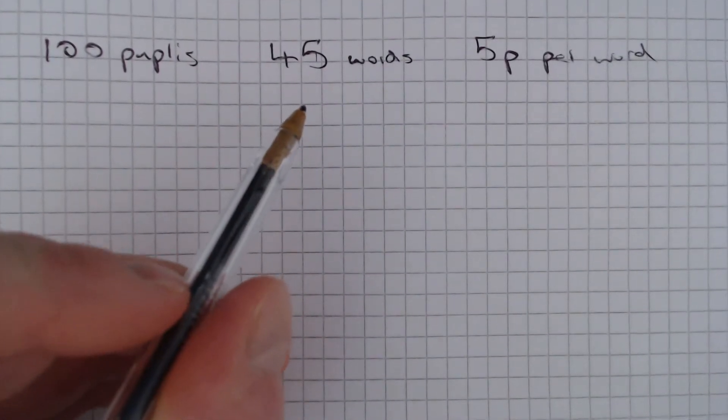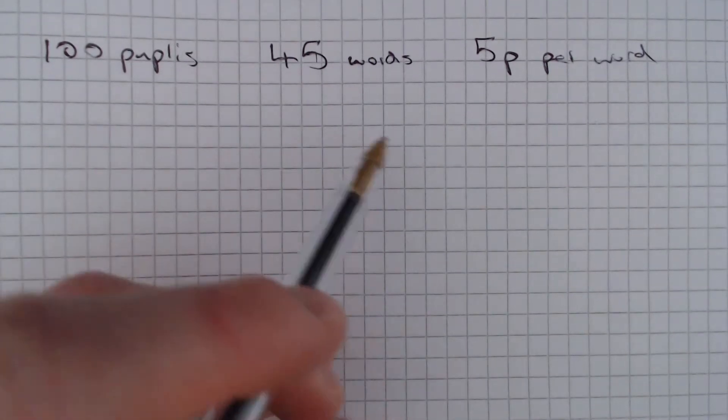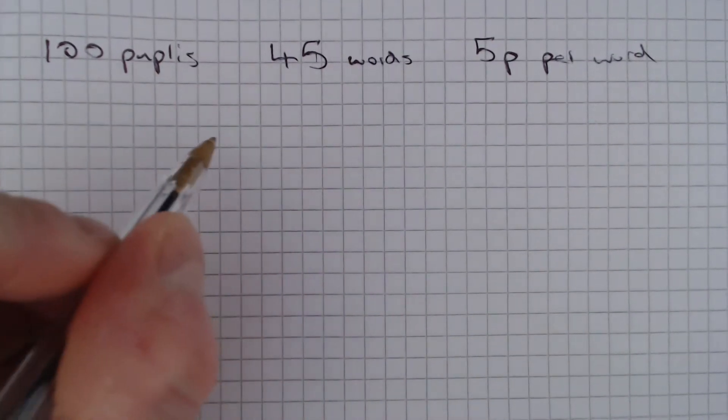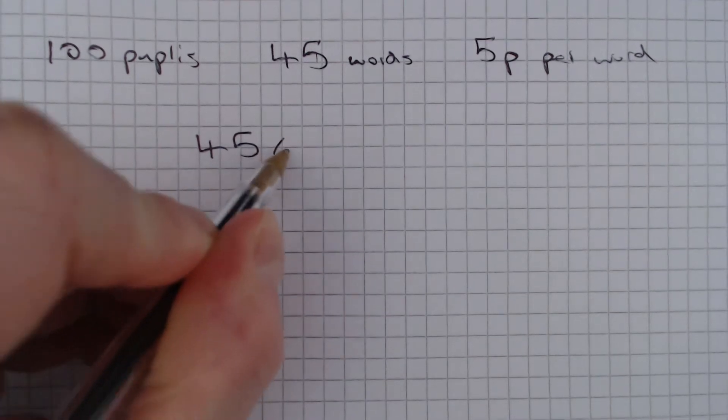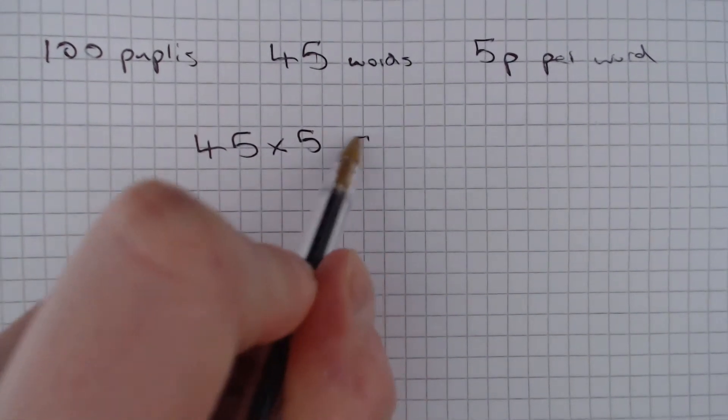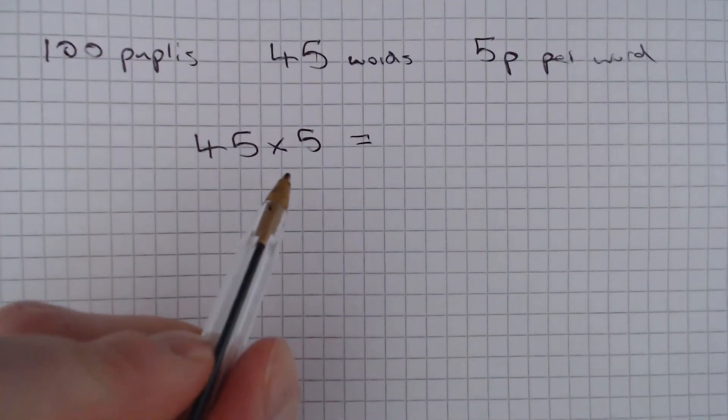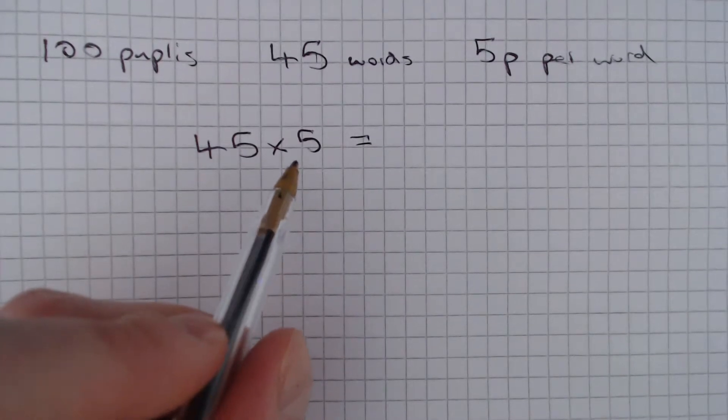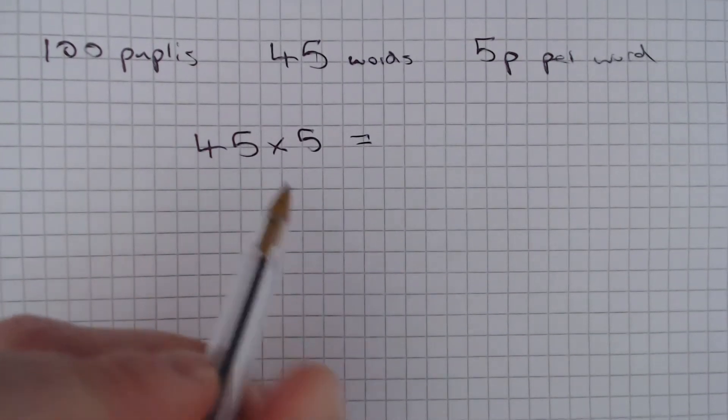So there are 45 words in each test and you get sponsored at 5 pence per word. So we can do 45 multiplied by 5, and remember multiplying by 5 is the same as multiplying by 10, which gives 450, and dividing by 2, which gives 225.